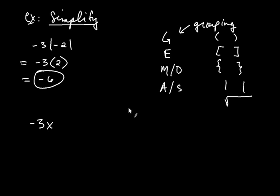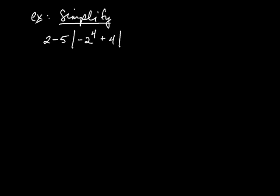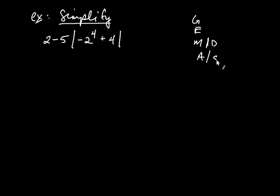Let's take another example of absolute value in the context of order of operations. Simplify this: 2 minus 5 multiplied by the absolute value of all of this — that's negative 2 raised to the fourth plus 4. Once again, I think about my order of operations: G, E, M slash D, and A slash S. G comes first — do you see any grouping symbols? Absolutely — the absolute value. With grouping symbols, you always do what's inside those first.